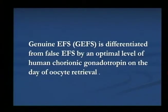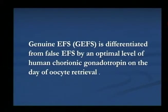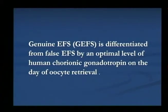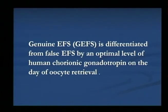When you go to the literature, you can see there is genuine Empty Follicle Syndrome. What is this genuine Empty Follicle Syndrome and false Empty Follicle Syndrome? In genuine Empty Follicle Syndrome, you get an optimal level of human chorionic gonadotropin on the day of oocyte retrieval, and in spite of that optimal dose, you still don't get oocytes.